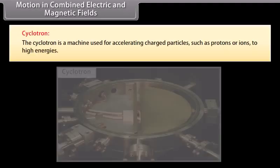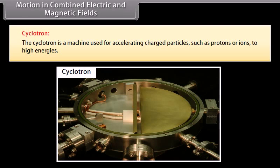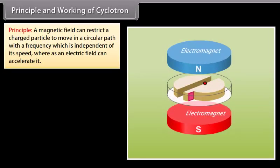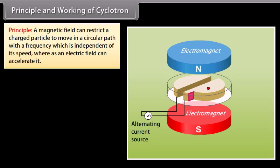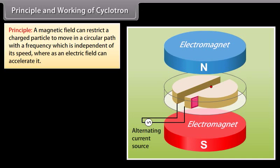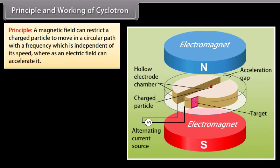Cyclotron: The cyclotron is a machine used for accelerating charged particles such as protons or ions to higher energies. It works on the principle that a magnetic field can restrict a charged particle to move in a circular path with a frequency which is independent of its speed, whereas an electric field can accelerate it.